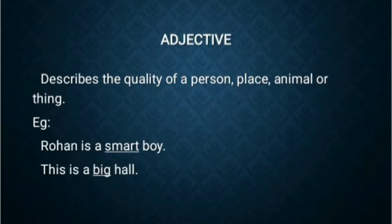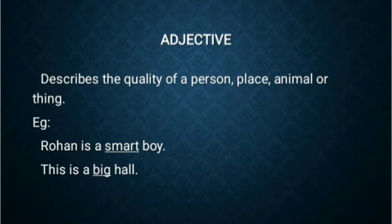Then comes the third part of speech, that is adjective. Adjective describes the quality of a person, place, animal, or thing. In short, it describes a noun — it gives information about the noun. For example, 'Rohan is a smart boy.' Here the word smart gives more information about the person Rohan, so it is an adjective. Another example: 'This is a big hall.' The word big gives more information about the place, which is a hall, so it is an adjective.